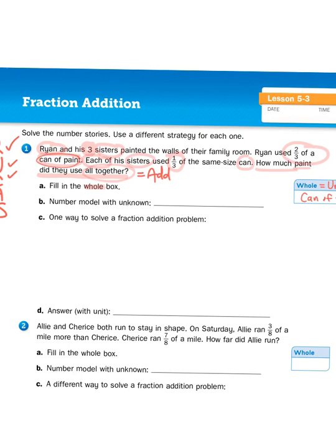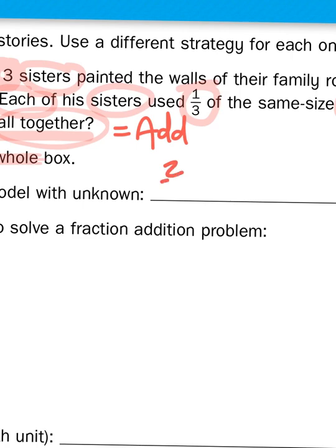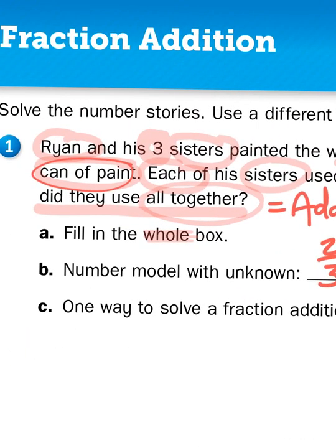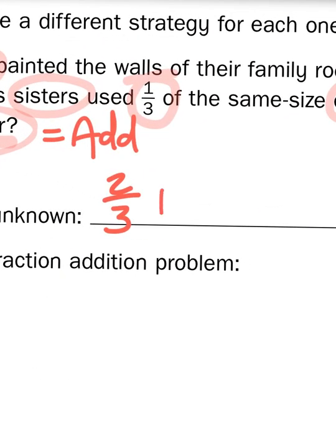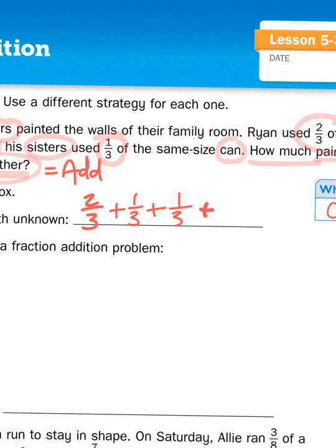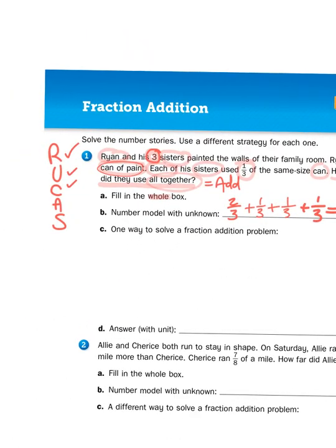So now I have to add the amounts. I know how much paint Ryan used. He used two-thirds of a can. And each of his sisters used one-third of a can. And there are three sisters. So that means I have three groups or three add-ins that are one-third. So two-thirds plus one-third plus one-third plus another one-third is going to give me my total. P for paint.